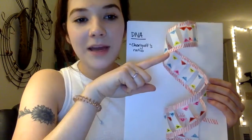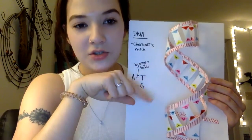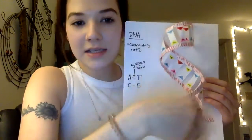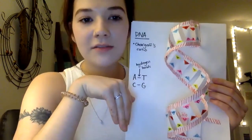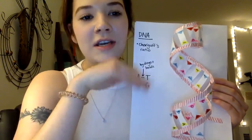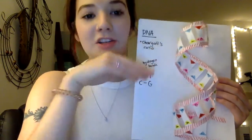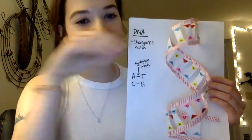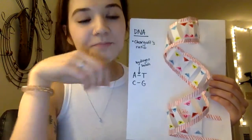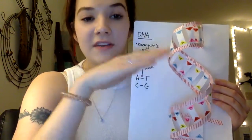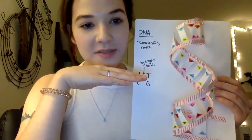Then we have the phosphate backbone, which is two strands, is negatively charged, making the DNA molecule negatively charged. It's hydrophilic, which means it likes water, and it has phosphate and sugar groups.